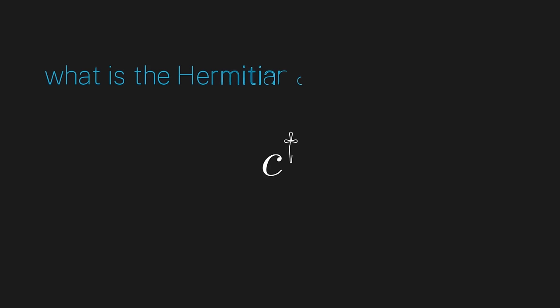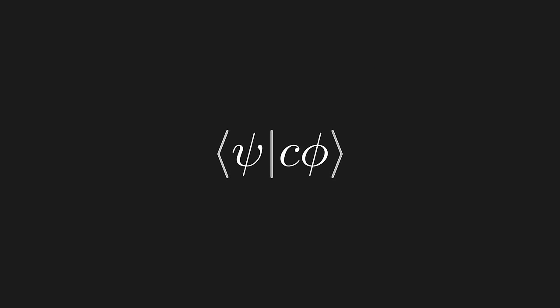What is the Hermitian adjoint of this? Well, we can set up an inner product with the scalar number as the operator. We want to know how to move this scalar to the other side of the inner product. Well, we can pull the scalar out of the right-hand side of the inner product since the right side is linear. Then, we can remember that the left side of the inner product is anti-linear, so we have to complex conjugate the scalar to move it to the left side.